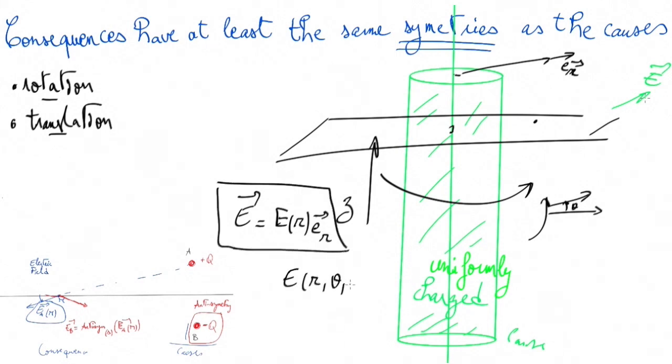Thus, there is no need to calculate how E depends on theta or z, reducing the amount of calculation we have to do to calculate the field. This small example shows us how the symmetries of the causes can be used to reduce the work to guess how the consequences would be. And this is very useful in physics, particularly in electromagnetism.